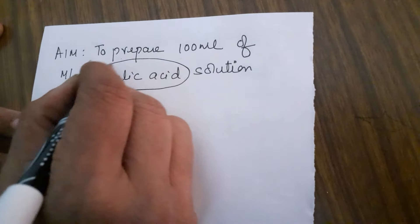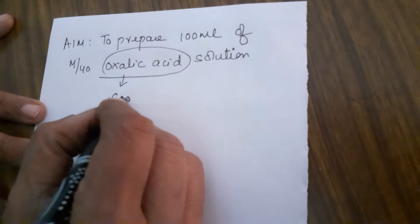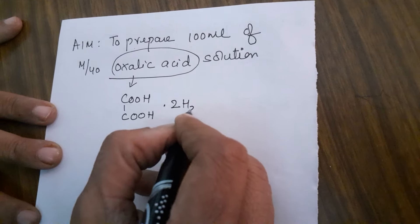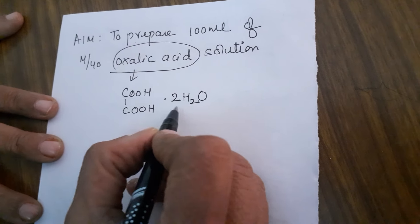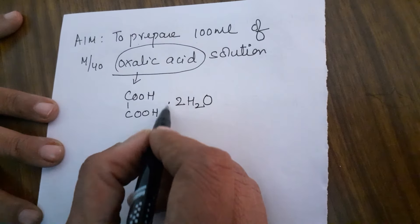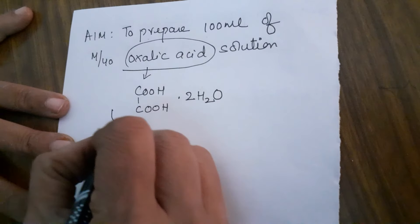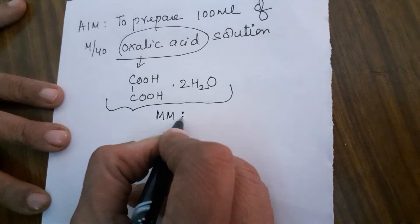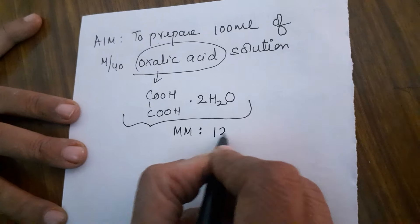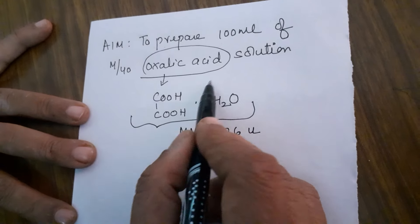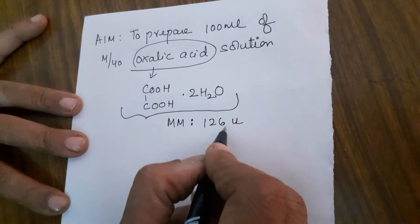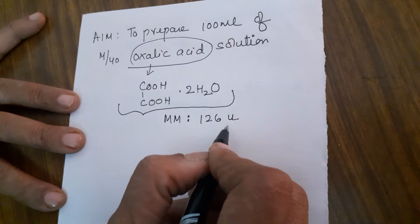First, we need the formula of oxalic acid: COOH bonded to COOH. Please do not forget there is a 2H₂O — it is a dihydrate. Many students forget this, and then their molecular mass calculation also goes wrong. If you add it all up, the molecular mass comes out to be 126 u. If you forget the 2H₂O, your answer will come to 90 and everything goes wrong. So, molecular mass is 126.